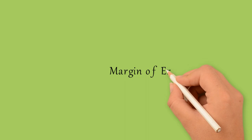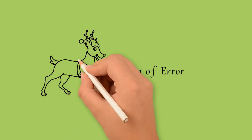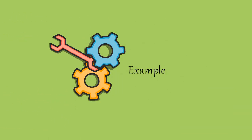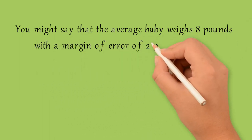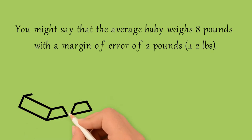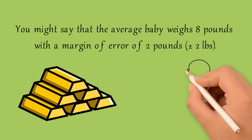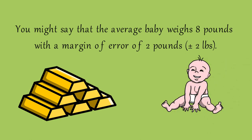Next type hamare paas aati hai margin of error. Aapko naam se hi pata chal raha hoga ke aapki jo bhi measurement hai, us mein margin of error aapke paas kitna hai — that is basically known as margin of error. For example, you might say that the average baby weighs 8 pounds with a margin of error of 2 pounds. Matlab average jo babies hain, un ka weight round about 8 pounds tak hai, lekin mere paas yahan pe plus minus 2 pounds ka margin hai — that means baby 6, 7, 9, ya 10 pounds ka bhi ho sakta hai. This is basically known as margin of error.